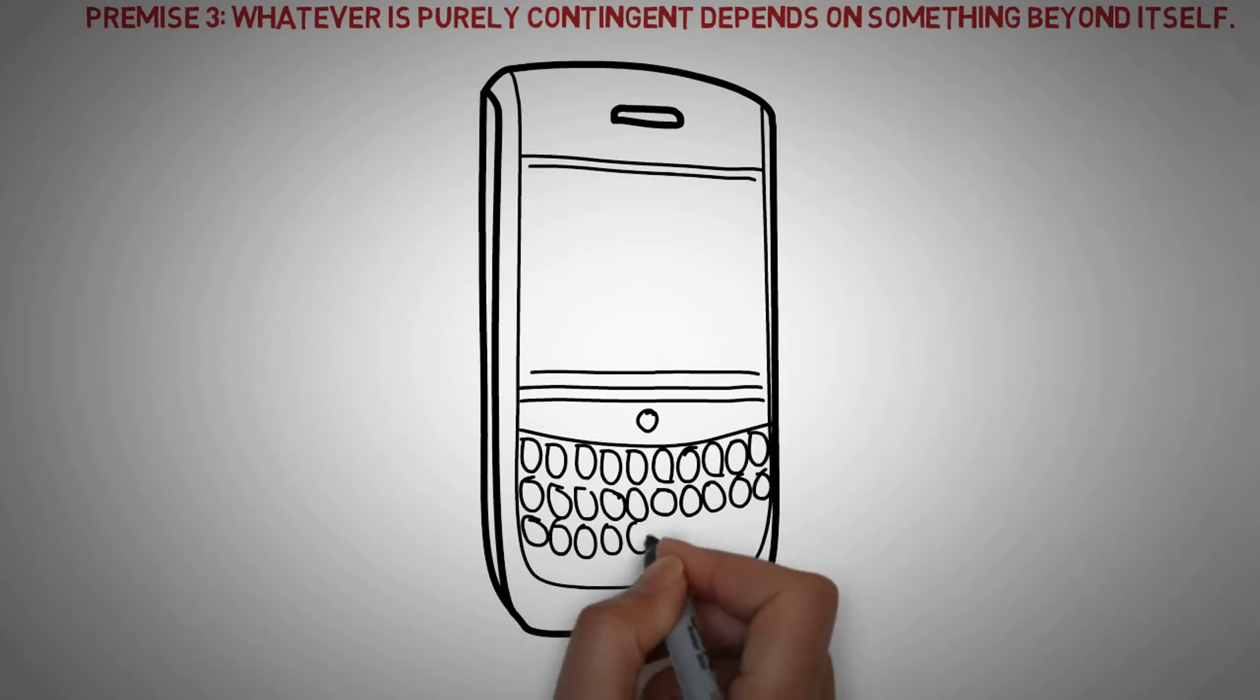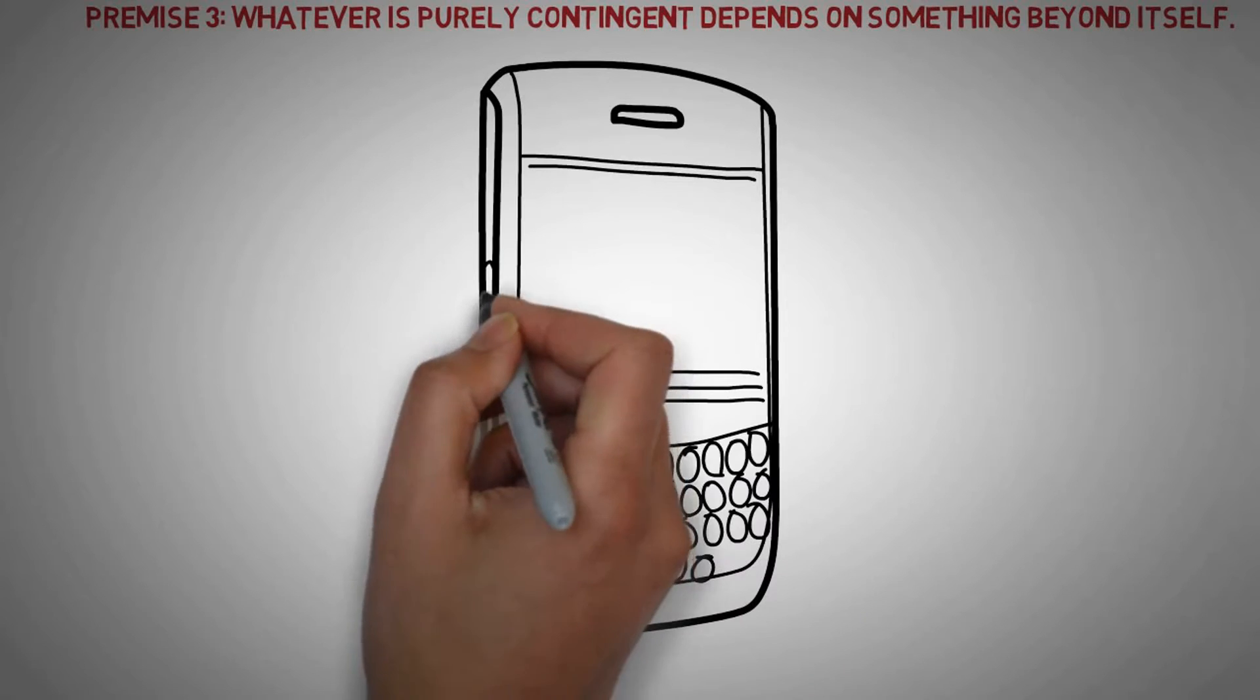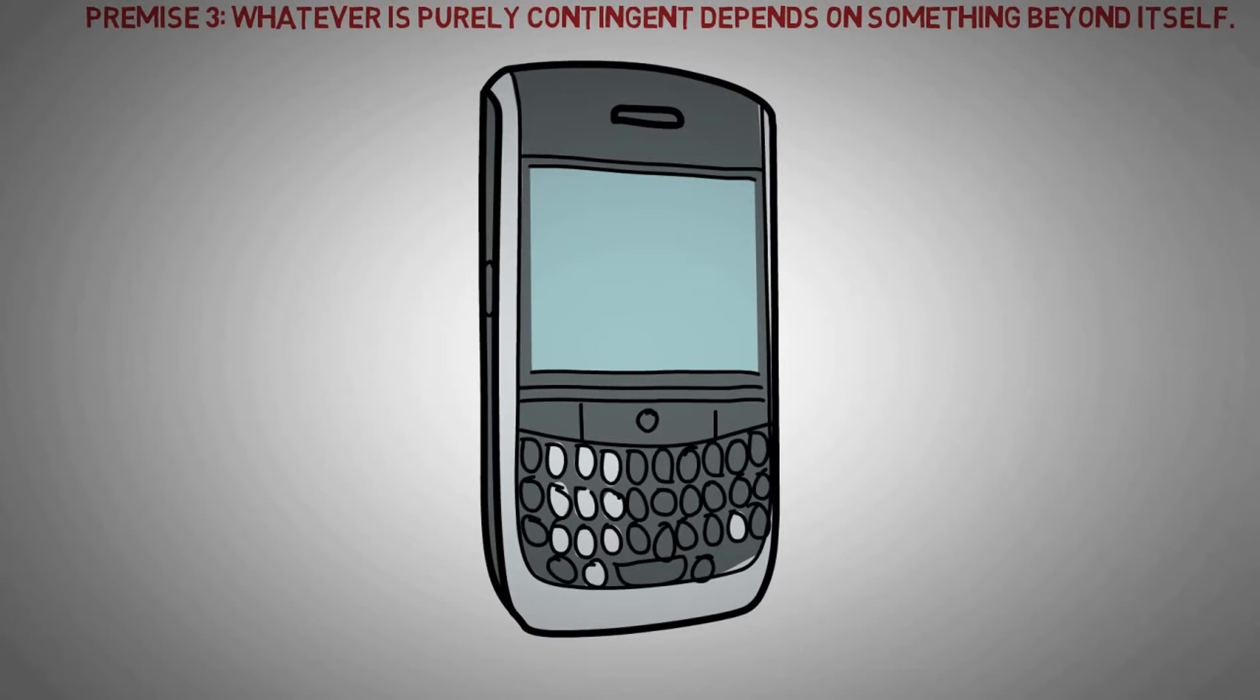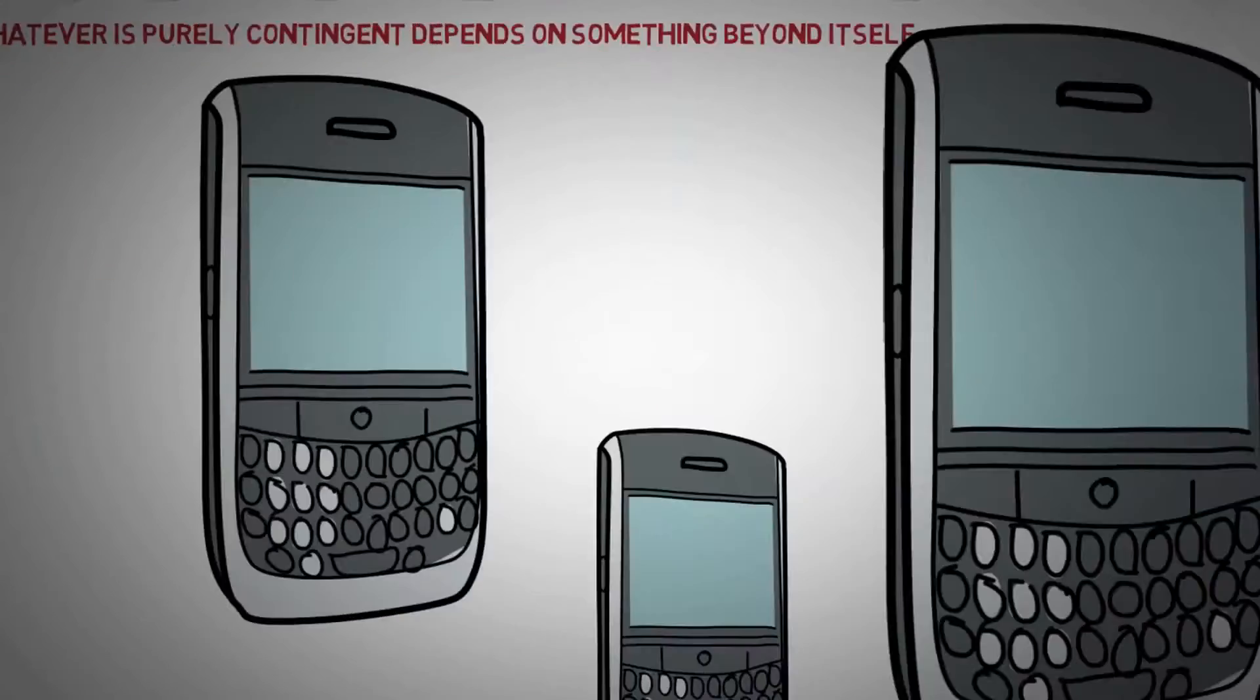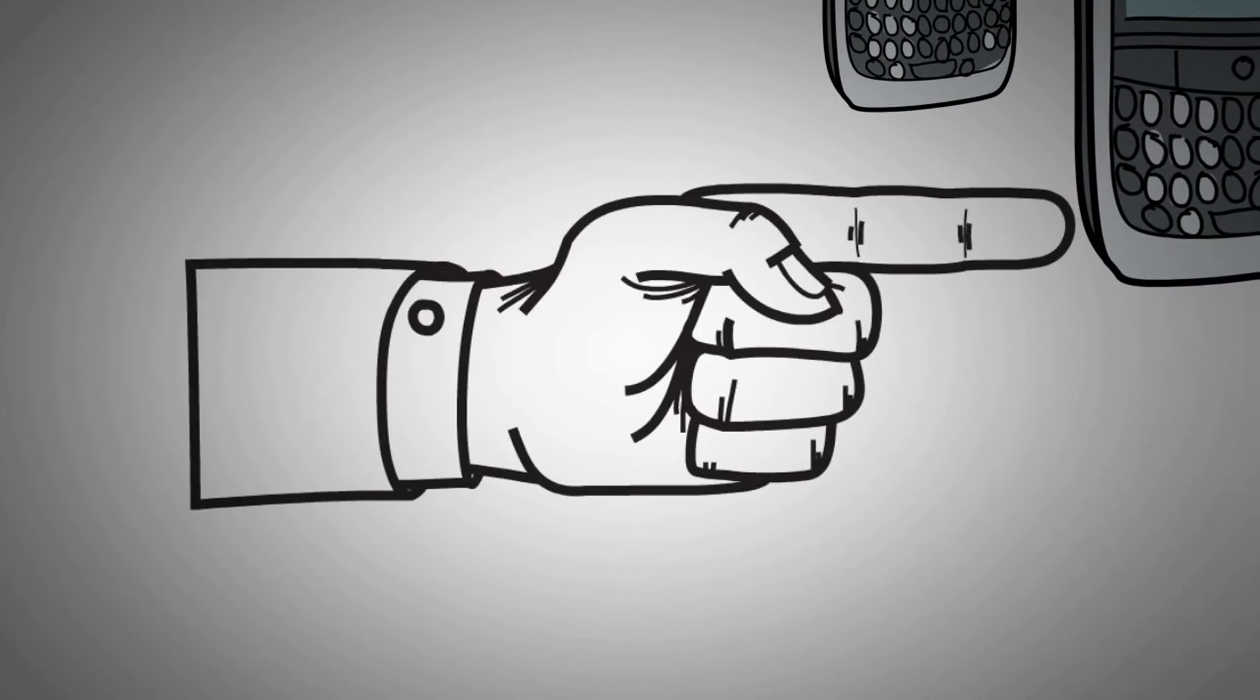But now we can ask how could something that is purely contingent actually exist? According to the principle of dependence, an imaginary phone can actually exist if it has some source which it depends on. Otherwise, imaginary phones would just be able to appear from nowhere from nothing. But that never happens, so they require a source.